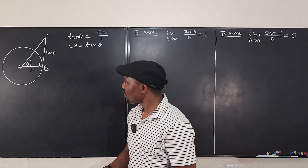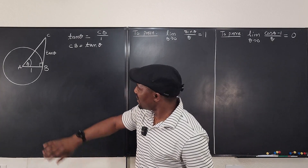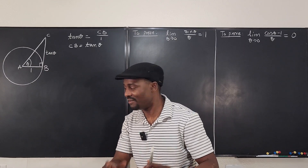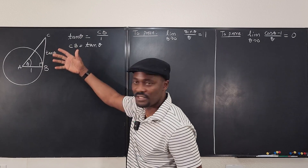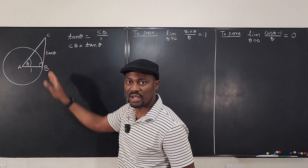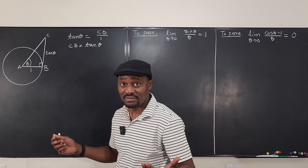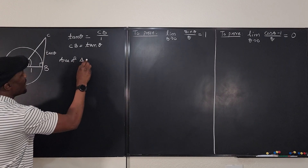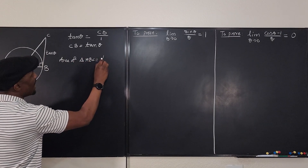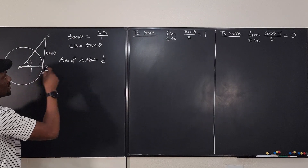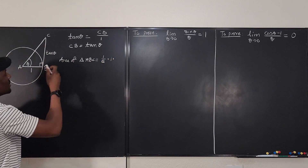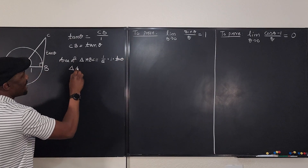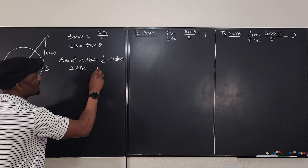Now, what is the area of this triangle? Since it's a right triangle, the area is one half the base multiplied by the height. The area of triangle ABC is one half times the base, which is one, times the height, which is tan θ. So the area of triangle ABC equals tan θ over two.